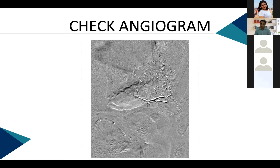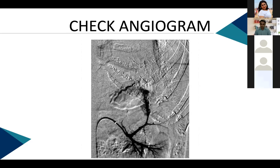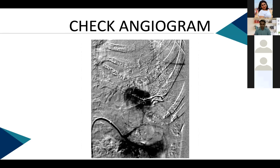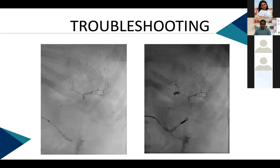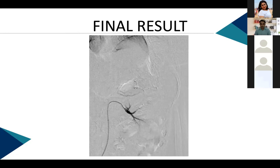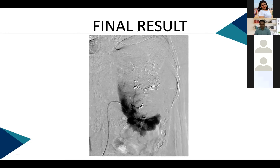Just as they were ready to confirm success, there was clear extravasation — an arterial rupture of the feeding vessel. Troubleshooting: the Scepter XC was quickly repositioned into the posterior branch and inflated. A 0.027 prograde micro catheter was used to enter the feeding vessel. An attempt to place a coil within the feeding vessel failed as the rupture was too proximal and the coil went into the parenchyma. The micro catheter was pulled back and the posterior branch of the renal artery itself was embolized.